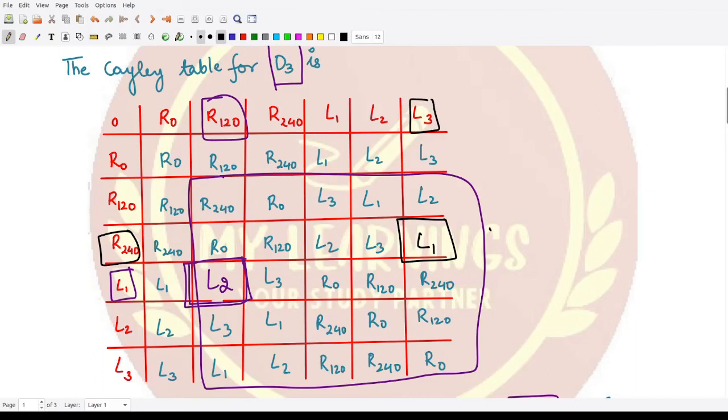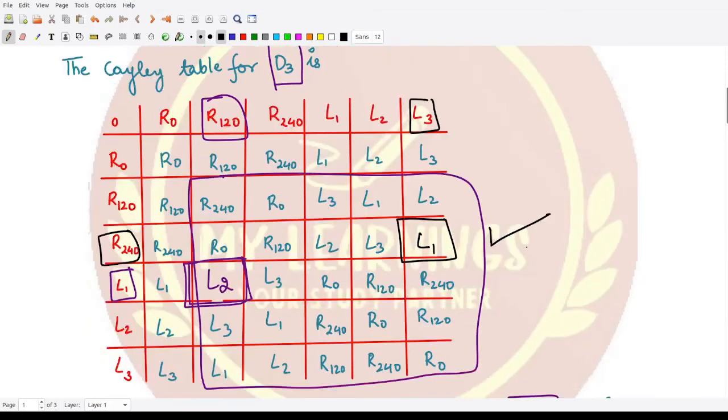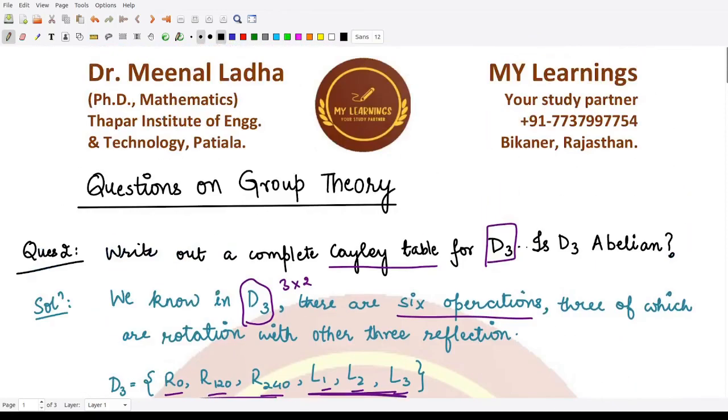I ask you to pause this video and complete the table by yourself. You'll understand better if you do the questions yourself and then refer back to the video for checking the solution. I hope you understood this Cayley table for D3. That's it for this video. Thank you for watching.